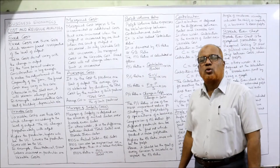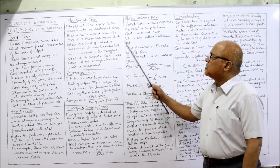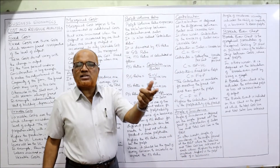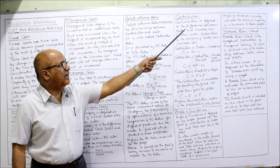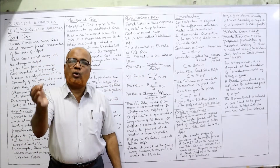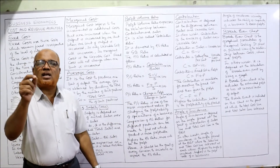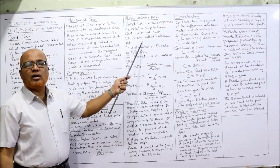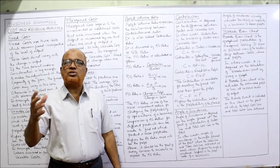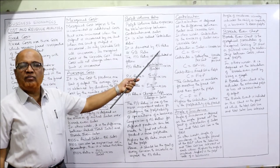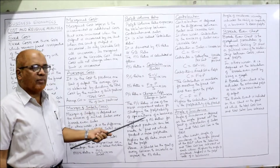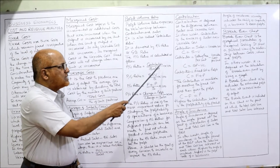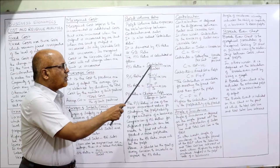The next concept is profit volume ratio (PV ratio), a very important concept. PV ratio expresses the relationship between contribution and sales. Contribution is the excess of sales over variable cost. The PV ratio is the ratio of contribution to sales — contribution divided by sales. It is also called the contribution ratio or CS ratio. The formula is: PV ratio = contribution / sales × 100, or (S minus V) / S × 100.